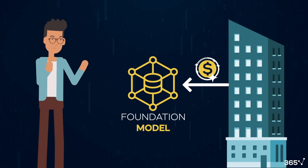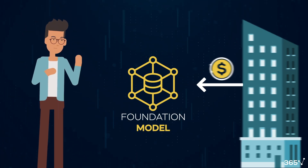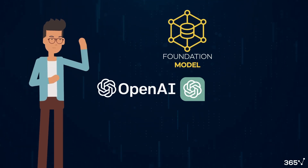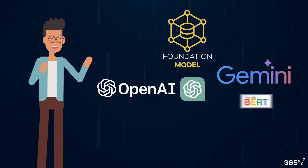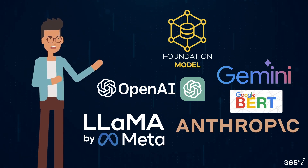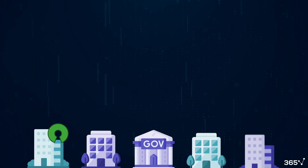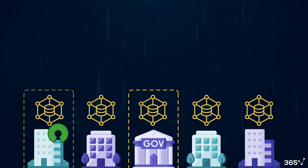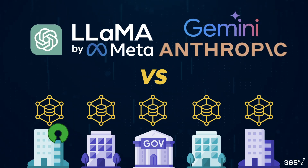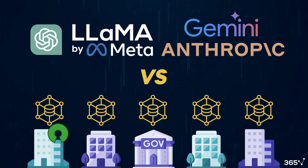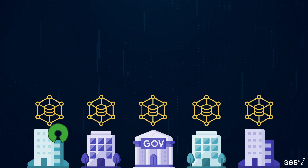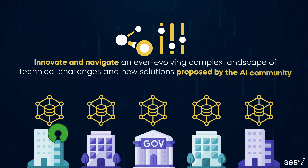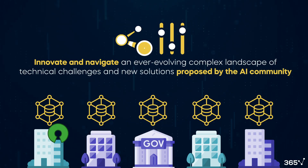Building a foundation model requires extensive financial resources. The best-known foundation models include OpenAI's GPT, Google's Gemini and BERT, Meta's Llama, and Anthropic's Claude. Numerous organizations, however, are ambitious enough to develop their own foundation models, including governments and the open source community. Building a proprietary foundation model that successfully competes with the powerful alternatives available in the AI market is challenging. Organizations that aim to do so must innovate and navigate an ever-evolving, complex landscape of technical challenges and new solutions proposed by the AI community.